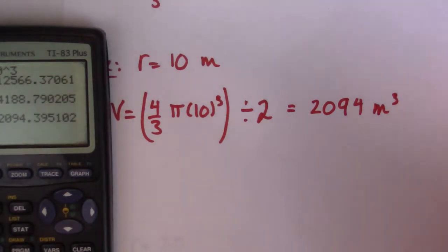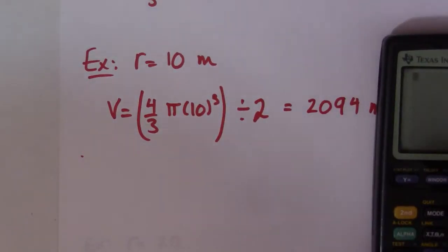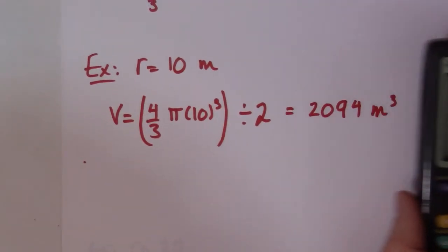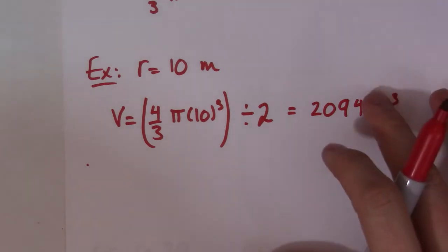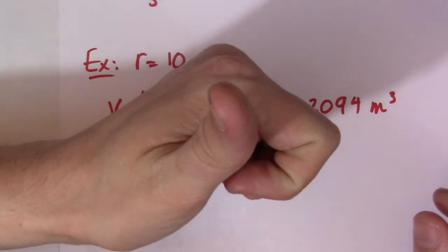And that's really it. That is how you find the volume of a hemisphere. The volume of the hemisphere is exactly half that of a sphere. I hope this helps you on solving some of your math questions. Thank you very much for watching, and I will see you guys in class.